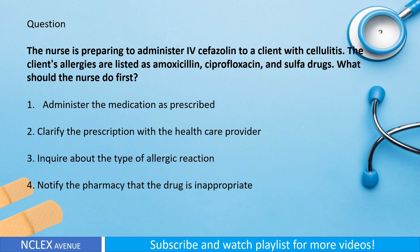Question: The nurse is preparing to administer IV cefazolin to a client with cellulitis. The client's allergies are listed as amoxicillin, ciprofloxacin, and sulfa drugs. What should the nurse do first? One: administer the medication as prescribed. Two: clarify the prescription with the health care provider. Three: inquire about the type of allergic reaction. Four: notify the pharmacy that the drug is inappropriate.